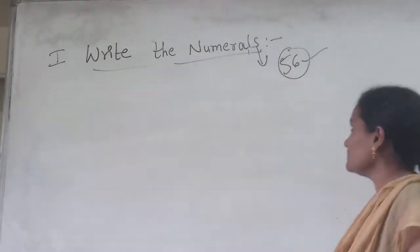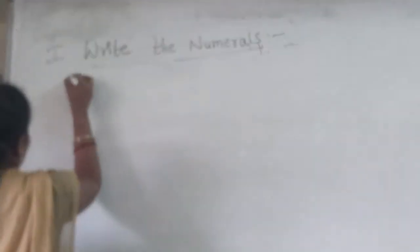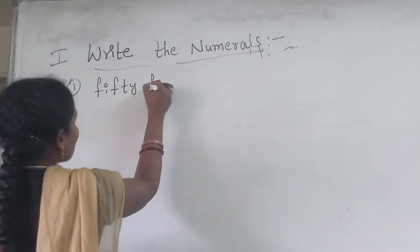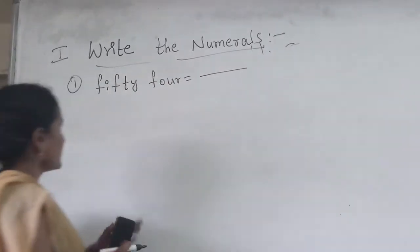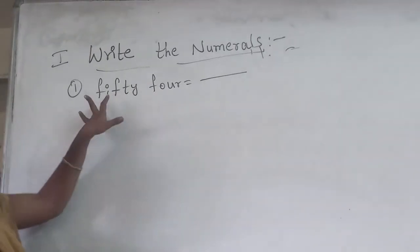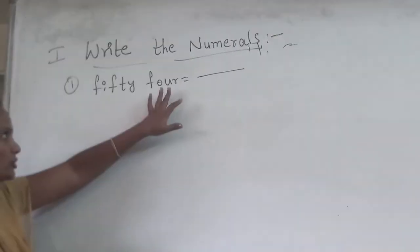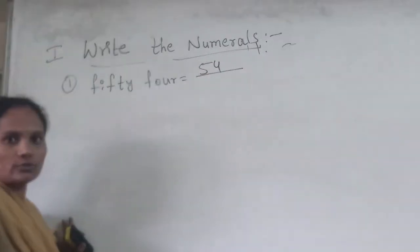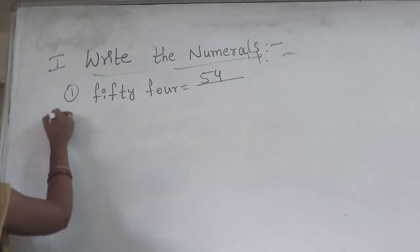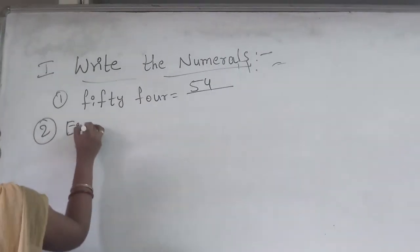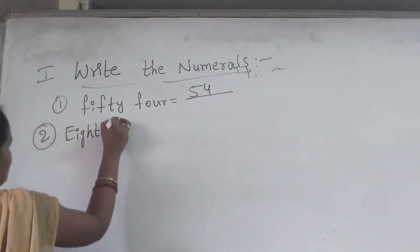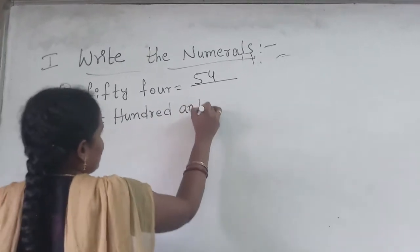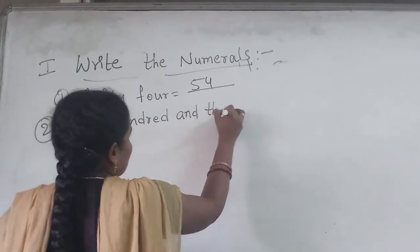Let's see one example: 57. Another example: 54. This is how a number is written — that is the numeral. Another one: 34.